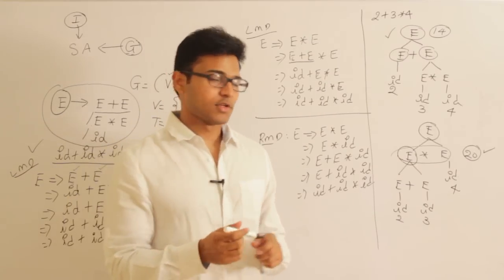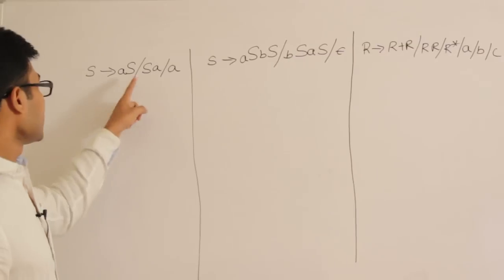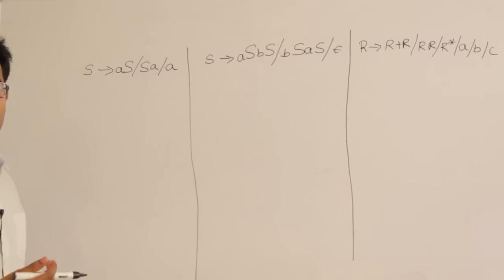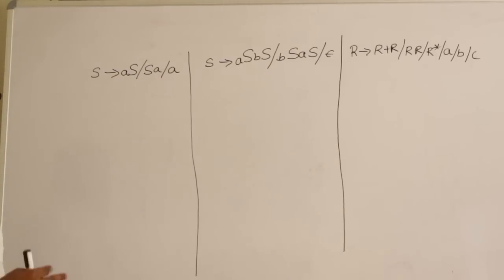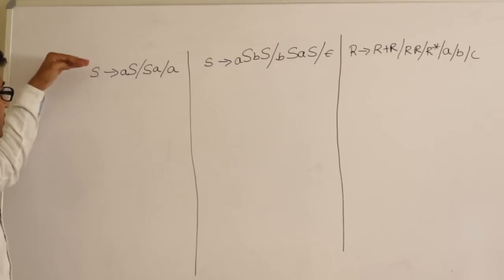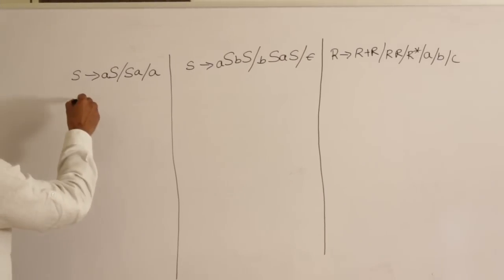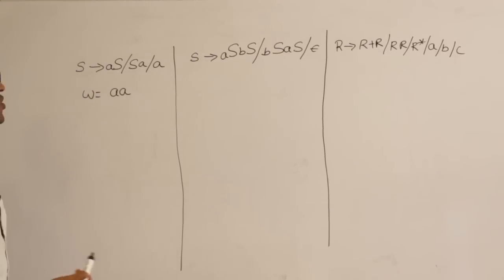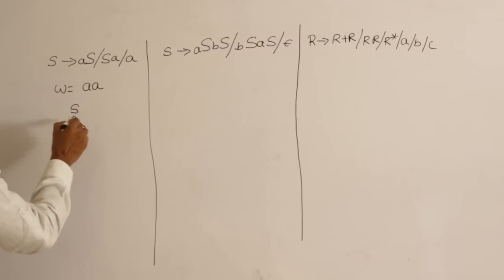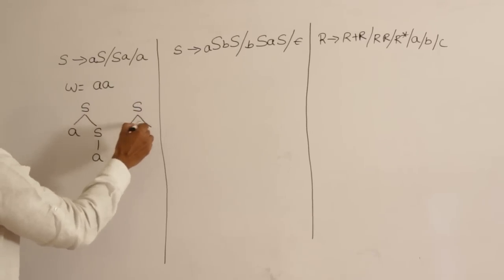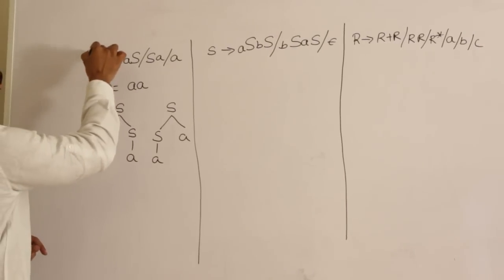Let's look at three examples to determine whether given grammars are ambiguous. Example 1: the grammar S → Sa | a. To check for ambiguity, I guess that the string 'aa' might yield more than one parse tree. Indeed, we can draw two different parse trees for 'aa' from this grammar. Since we get two parse trees for the same string, the grammar is ambiguous.